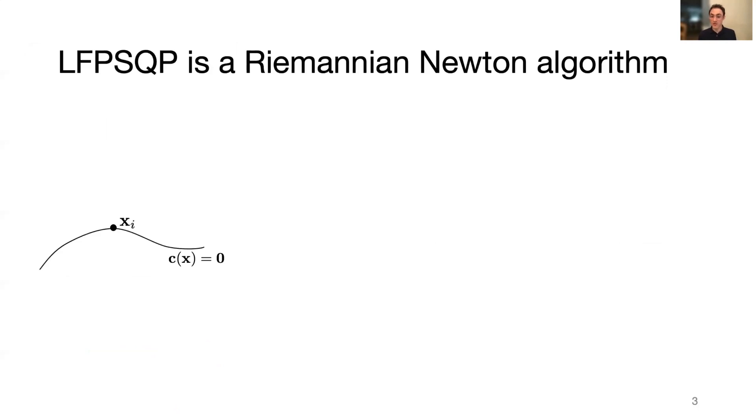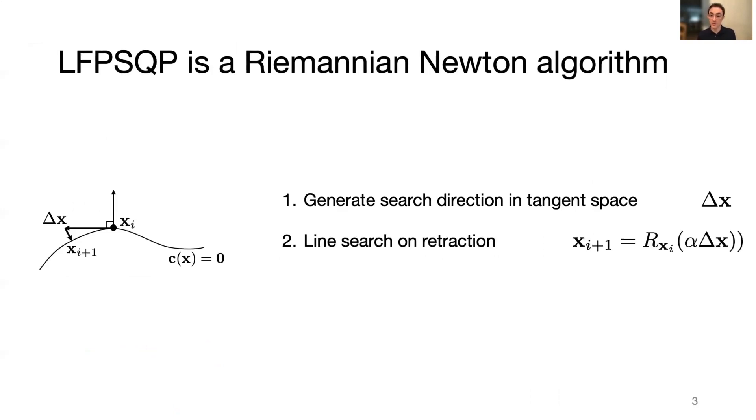LFP-SQP is like other manifold optimization packages, where at each step, a search direction is generated tangent to the constraint manifold, a line search is conducted along a retracted path, and then this is repeated until some termination criterion is satisfied.